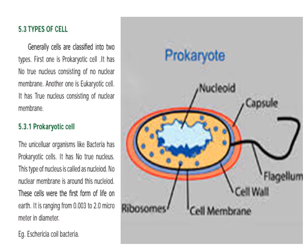Cells are of 2 types: prokaryotic and eukaryotic. Generally cells are classified into these two types. The first one is prokaryotic — it has no true nucleus. The nucleus is present but consists of no nuclear membrane.